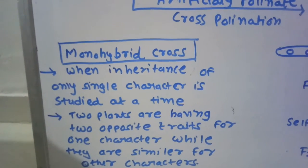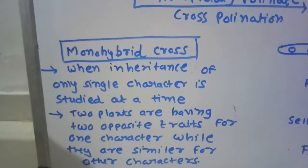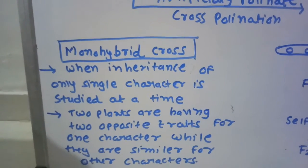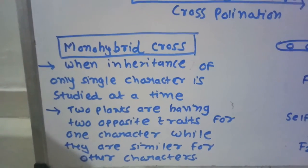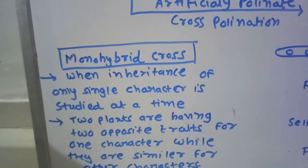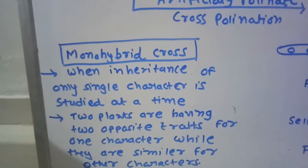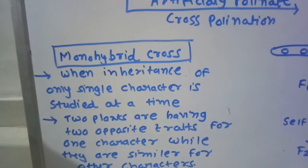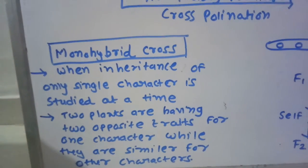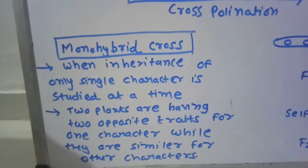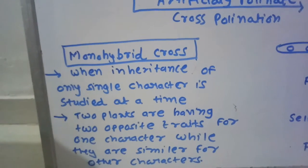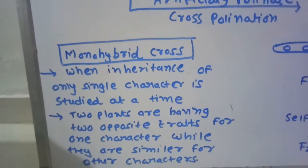First, he created true breeding pea lines in a garden pea plant by continuous self-pollination of a particular plant. In total, he created 14 different types of true breeding pea lines, each for a particular trait. Using these 14 different types of true breeding pea lines, he performed various hybridization experiments.